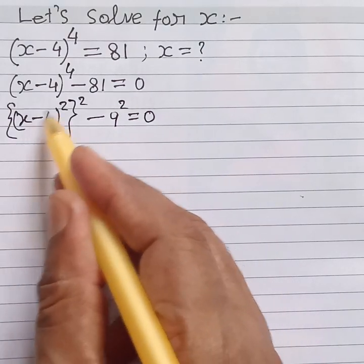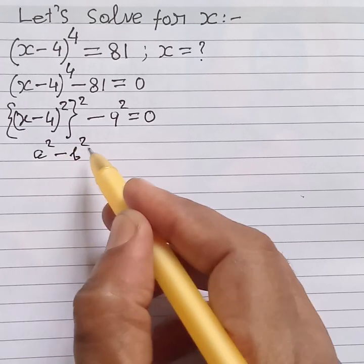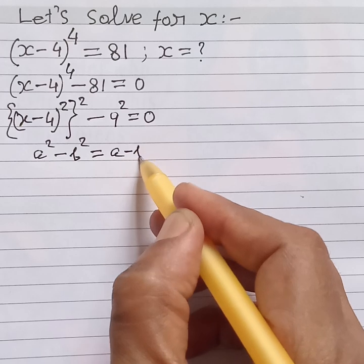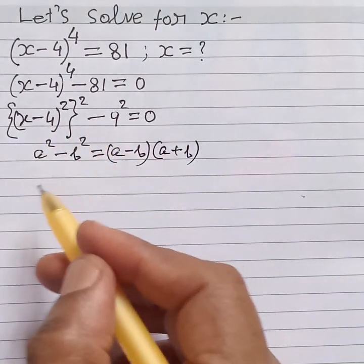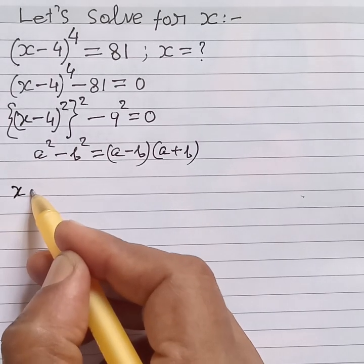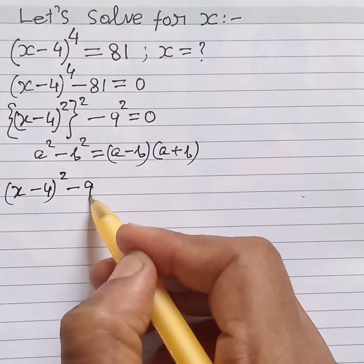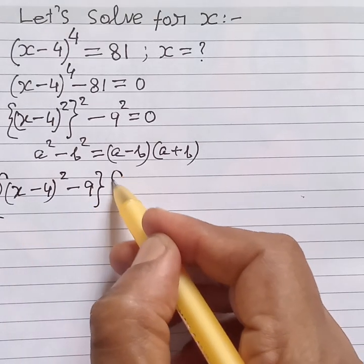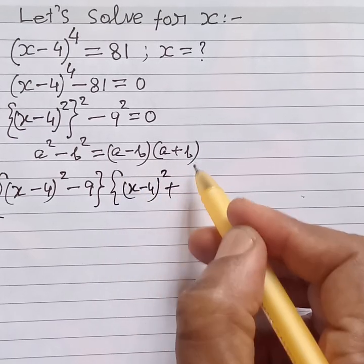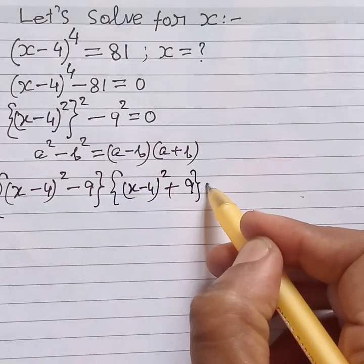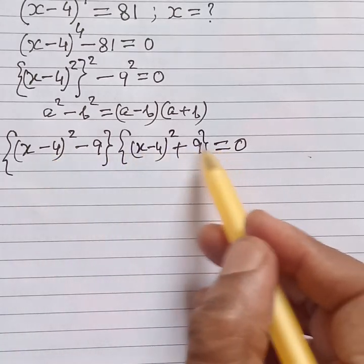This can be written as [(x minus 4) squared] squared minus 9 squared is equal to 0. Now if (x minus 4) squared is a and 9 is b, the formula is (a minus b) times (a plus b). So applying this formula it becomes: [(x minus 4) squared minus 9] times [(x minus 4) squared plus 9] is equal to 0.